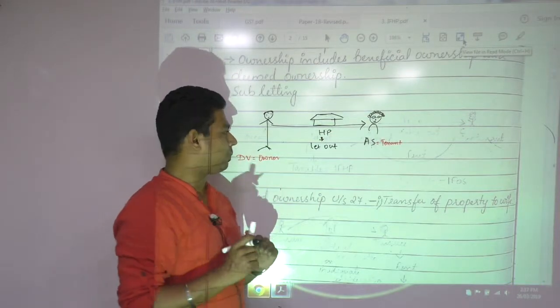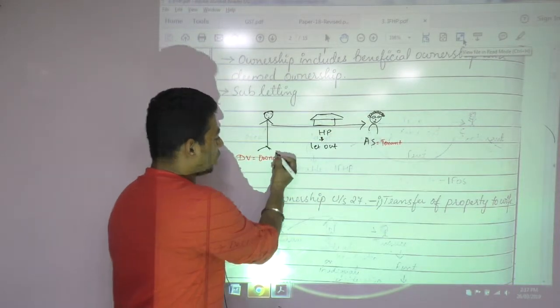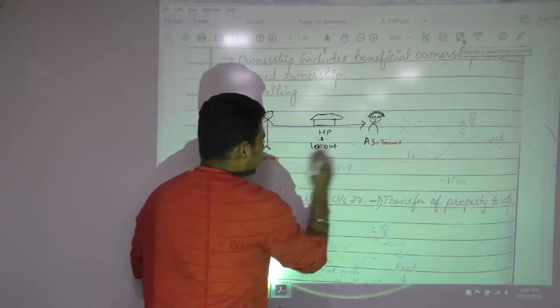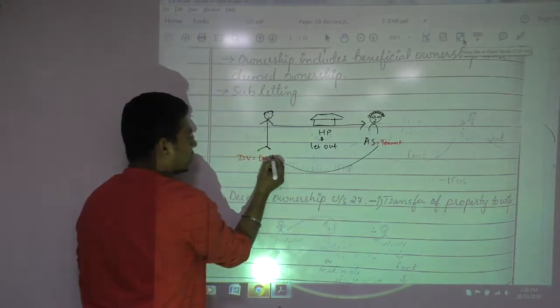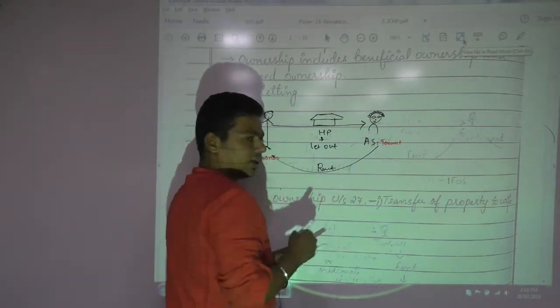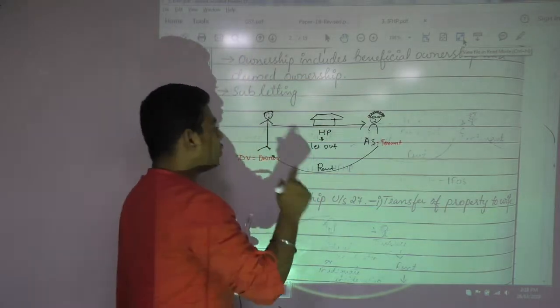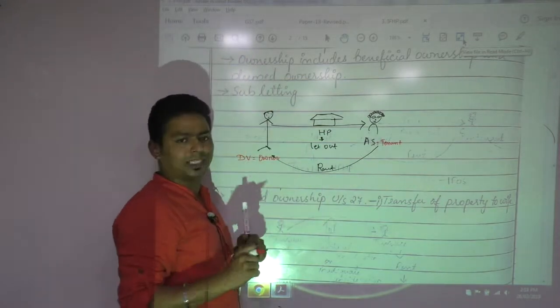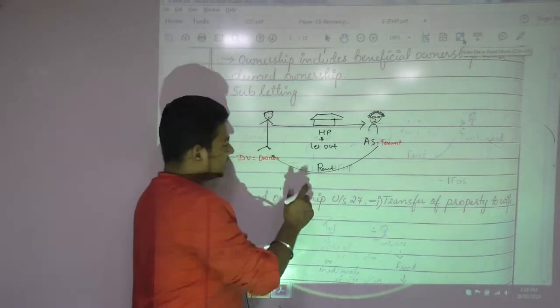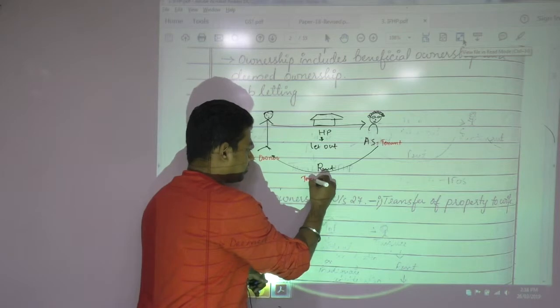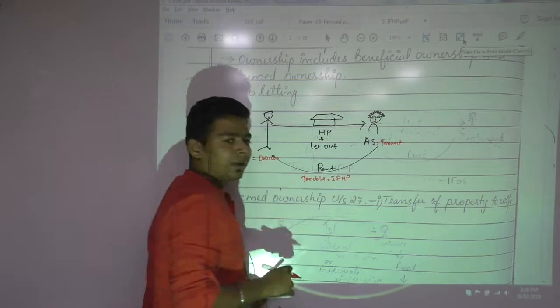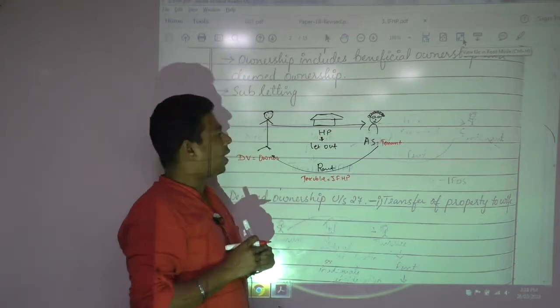Some people draw the arrow like this, but tenant will not pay owner. Owner will not pay rent to tenant - tenant will pay rent to owner. This is the rent. Now tell me, under which head should this rent be taxable?